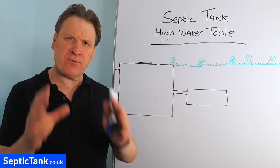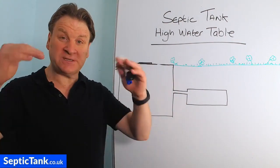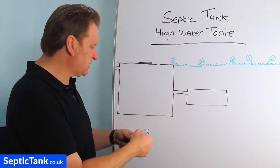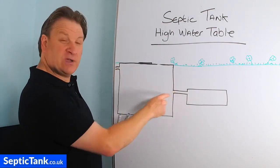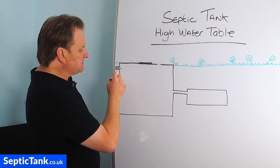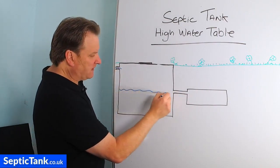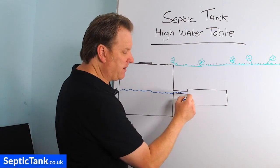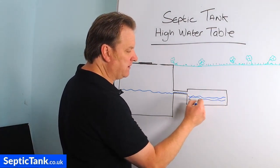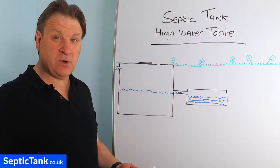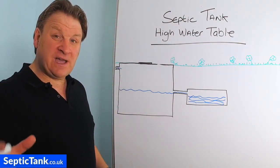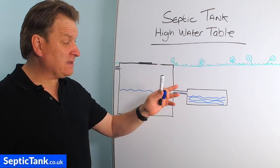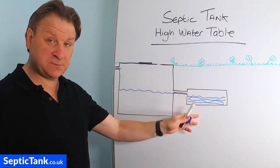Let me show you the problems that come from living in an area where the water table is quite high. So this is your septic tank and this is your soak away. You've got your inlet pipe and your outlet pipe. Water comes into the septic tank and fills up to a certain level — that's your waste water. It then makes its way down the outlet pipe and into the soak away. Now if you live in an area with a high water table, it will affect the function and the permeability of the water in the soak away.